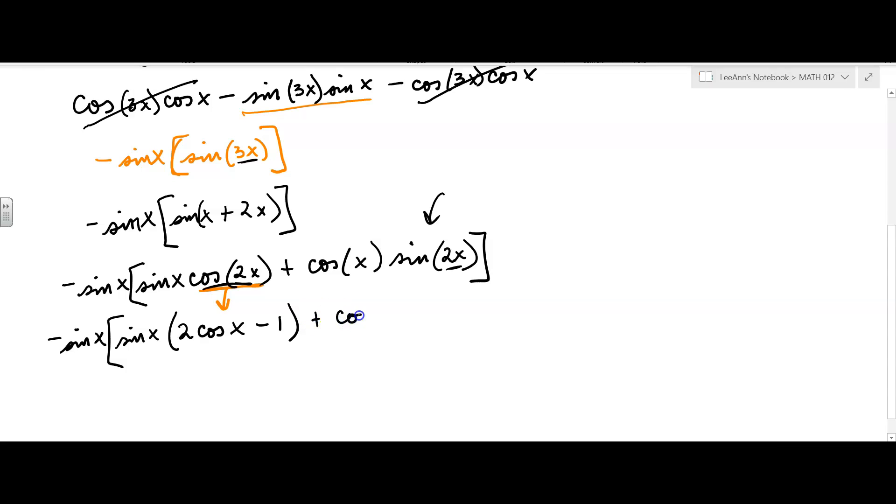Okay, plus cosine x, and then I'm going to think about the double angle for sine 2x. That one's a little bit easier. It is 2 sine x cosine x. Okay, so that's what we have right there so far.